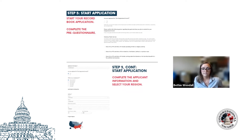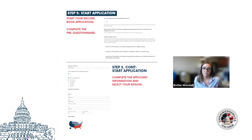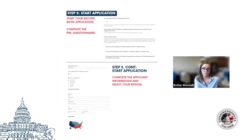When participants start their application, they're first going to fill out a general eligibility form. This helps us verify that participants are registered for the program and that they're planning goals and activities that fall within the guidelines of the program. Once they've filled this out, they can begin working on their actual record book.